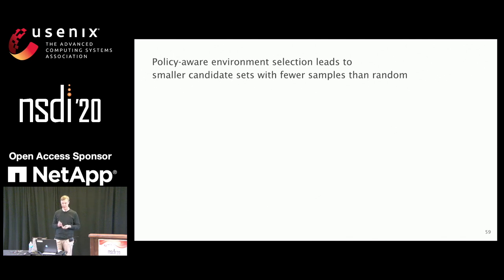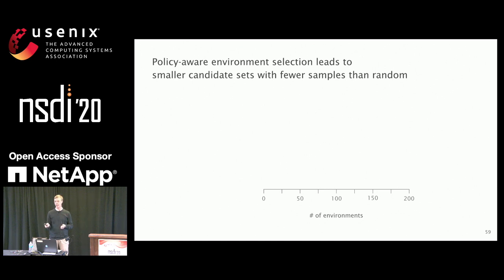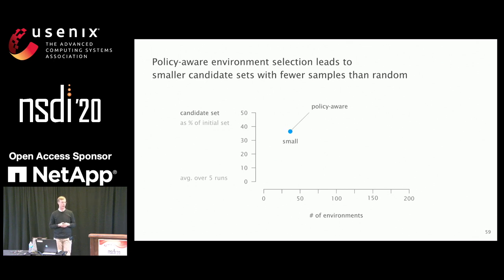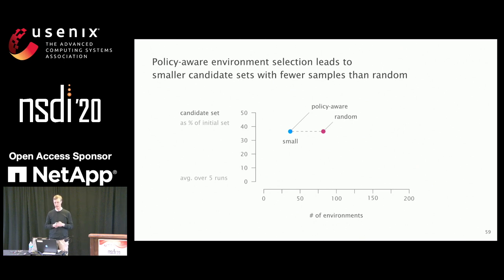Let's look at how the two techniques contribute. For the smart environment selection policy, we want to see how quickly we reach the switch point from data plane analysis to verification, and how much we reduce the candidate set. On the x-axis is the number of environments analyzed until we reach the switch point; on the y-axis is the remaining candidate set size relative to the initial set. For the smallest topology, after about 37 environments, the candidate set is at about 40% of the initial set. With a random approach, we'd need more than double the environments to reach the same size — and it gets even worse for larger topologies.